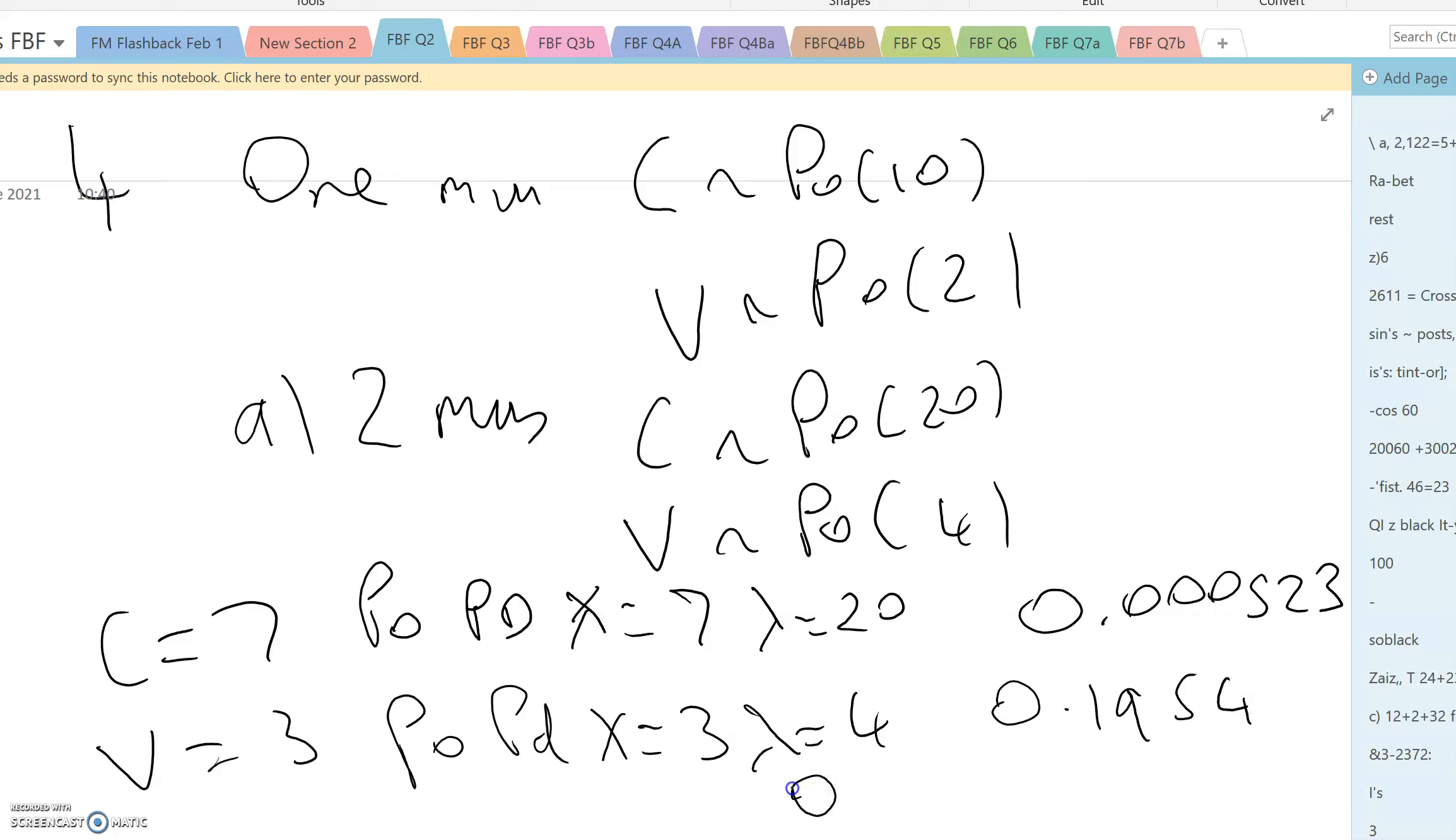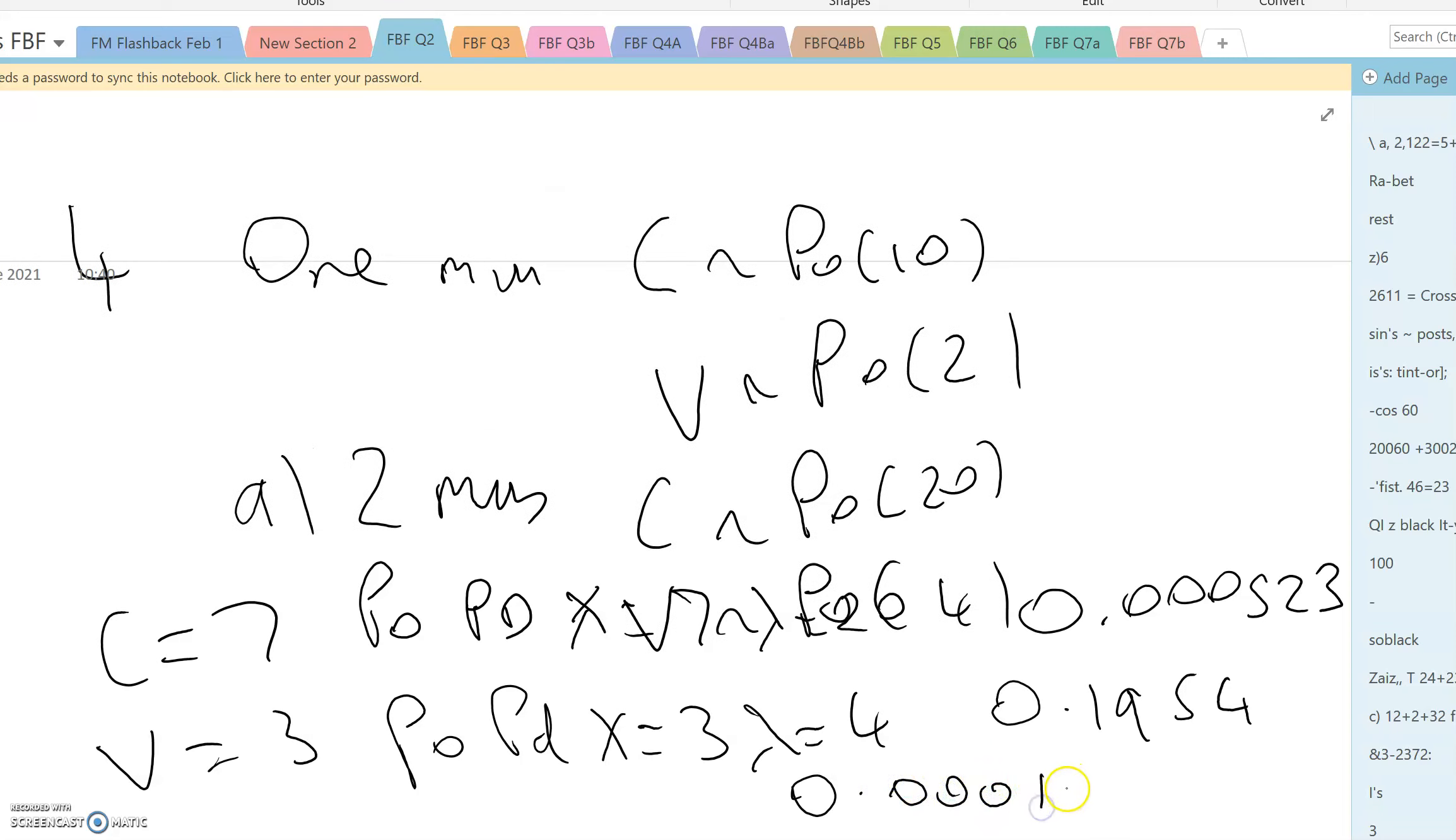And if you multiply those two together, you get 0.000102.